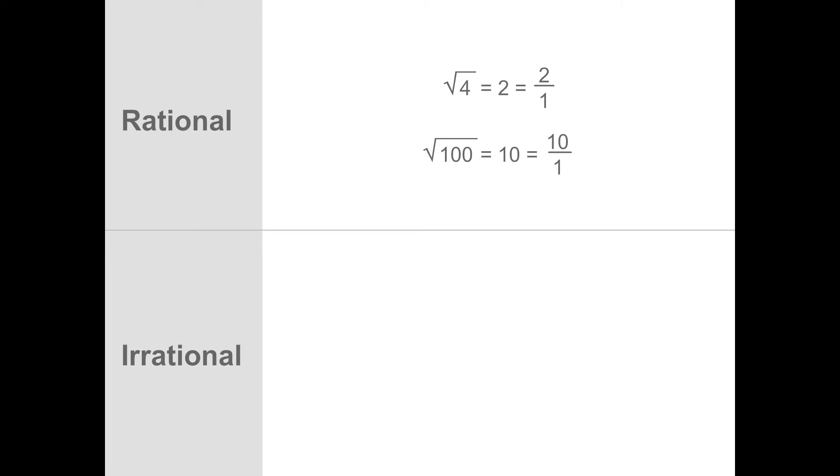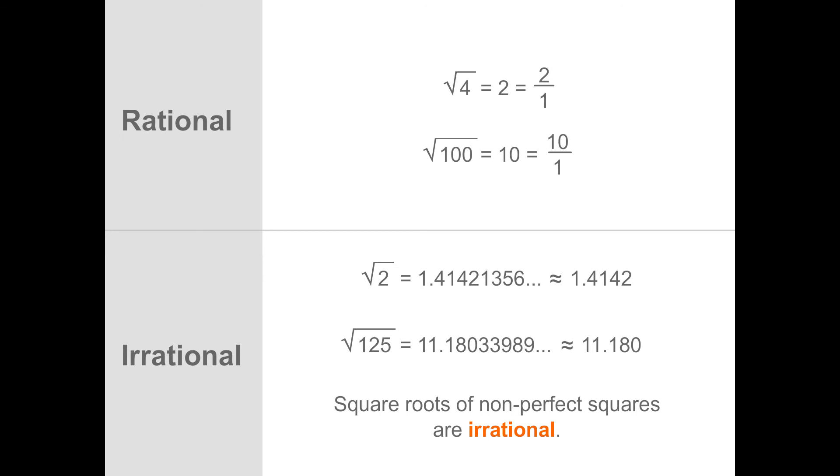What about the square root of 2 or the square root of 125? Neither of these can be written as an integer or the ratio of two integers. Quite often, the decimal approximation of these numbers is listed in the manner you see here. But neither of these decimal values terminates nor repeats. These types of real numbers, square roots of non-perfect squares, are also irrational numbers.